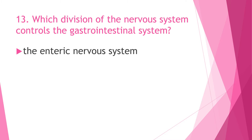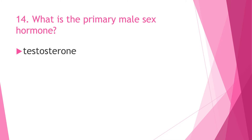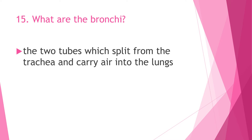Question 13: Which division of the nervous system controls the gastrointestinal system? The answer is the enteric nervous system. Question 14: What is the primary male sex hormone? The answer is testosterone.